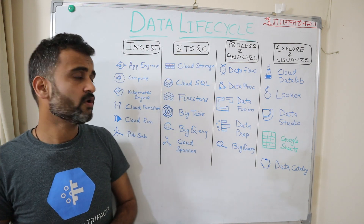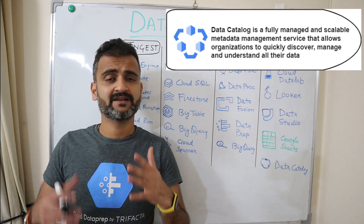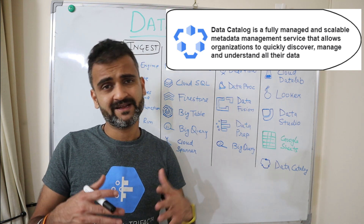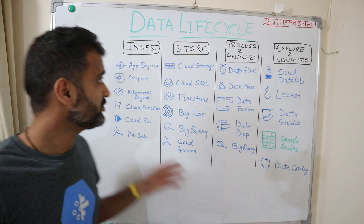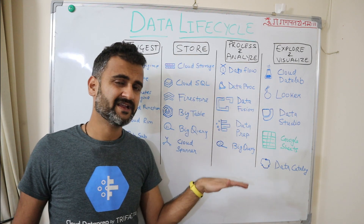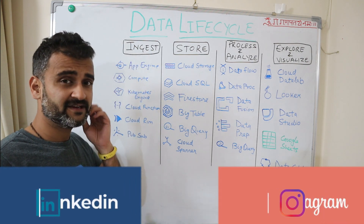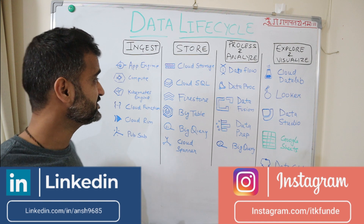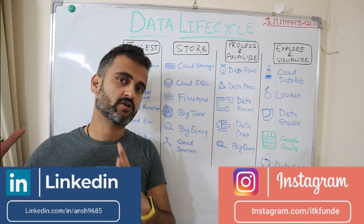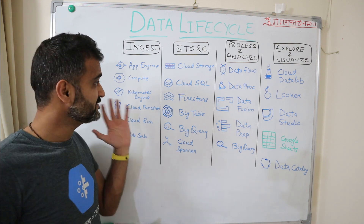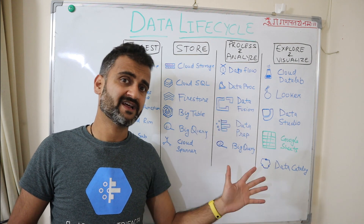Data Catalog is more about metadata management — we manage data definitions and overall data quality under Data Catalog. Some products, especially in artificial intelligence, have been intentionally skipped and may be covered in a separate video. But in totality, these products are used majorly when we talk about a data lifecycle.